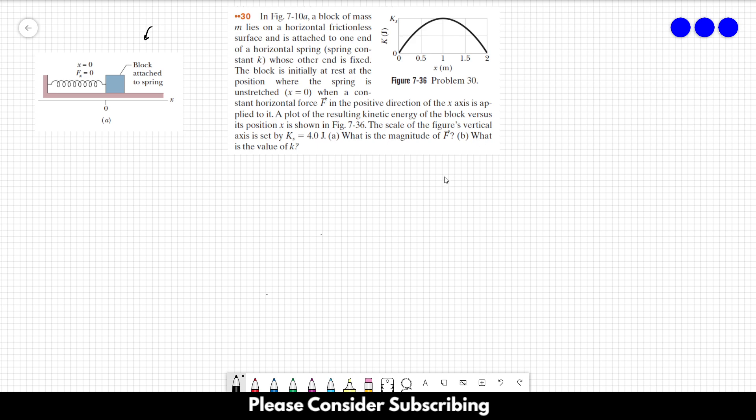A plot of the resulting kinetic energy of the block versus its position x is shown in this figure here. The scale of the figure's vertical axis is set by ks equals 4 joules, so this value here is equal to 4 joules. Letter A, what is the magnitude of F? Letter B, what is the value of K?